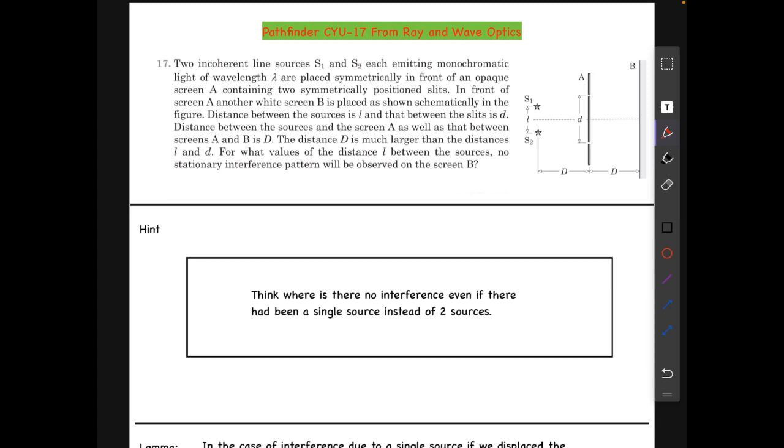What we need to know is that incoherent sources can never produce stationary interference patterns. Stationary interference patterns are produced only by two coherent sources. So basically here, stationary interference patterns will be produced by S1 individually and S2 individually, but there will be no interference between S1 and S2 which will be stationary.